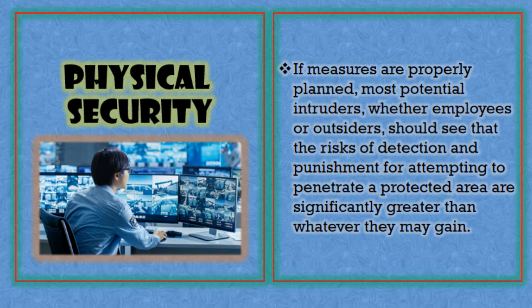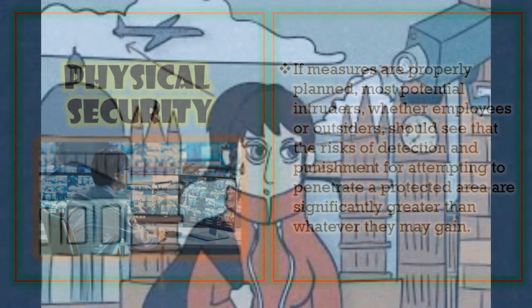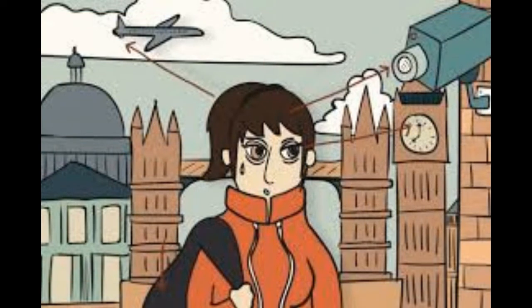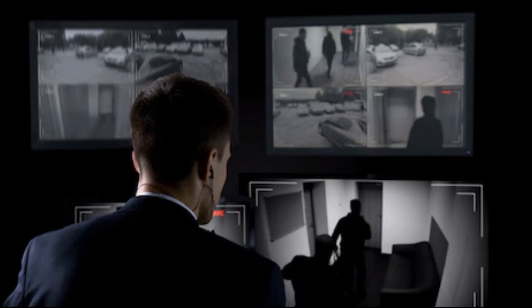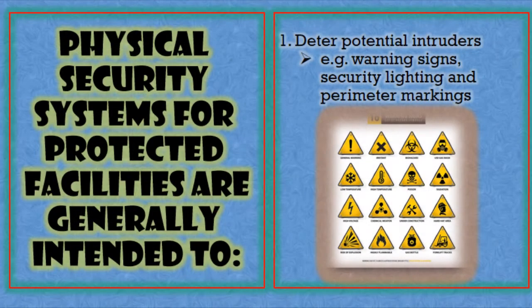If measures are properly planned, most potential intruders — whether employees or outsiders — should see the risk of detection. This is the psychological deterrent: if you are in a building filled with CCTV cameras, you will think twice about doing something wrong. The presence of many cameras monitoring your movements will create that psychological deterrent, making you reconsider any bad intentions.